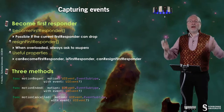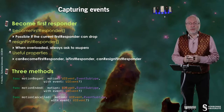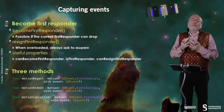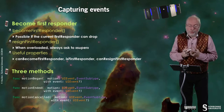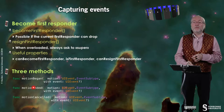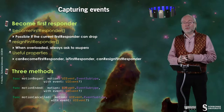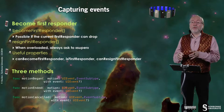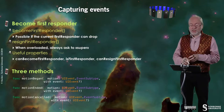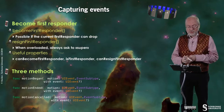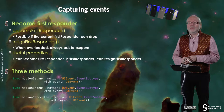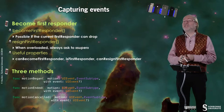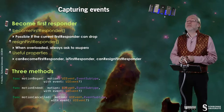There are three methods in this protocol that you just have to implement — to overload. The first one is motionBegan, which passes you the type of motion detected and the event. Then motionEnded with the same parameters, and motionCancelled with the same parameters.